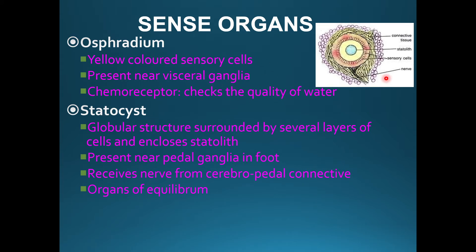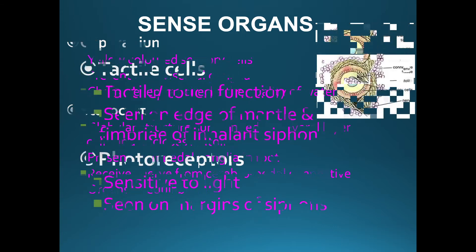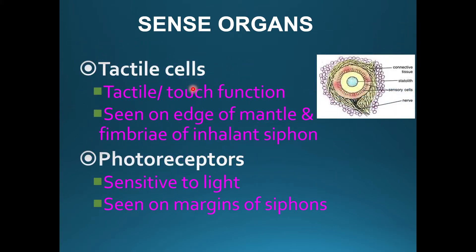The second sense organ is the Statocyst. It is a globular structure made up of many stones called statoliths inside. It is located near the cerebro-pedal connective and functions as an equilibrium organ — it helps UNIO to maintain balance. Tactile cells are found at the edge of the mantle and the fringe of the inhalant siphons, and they perform the touch function.